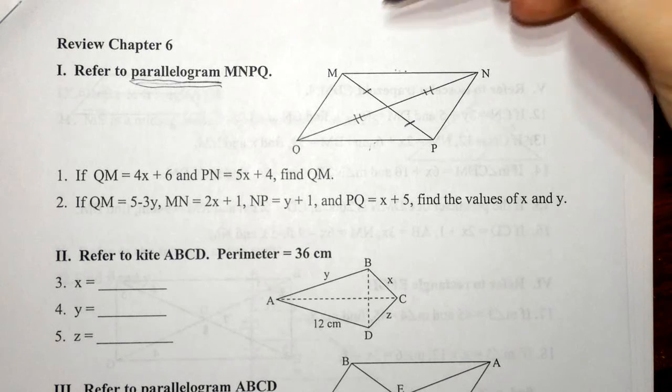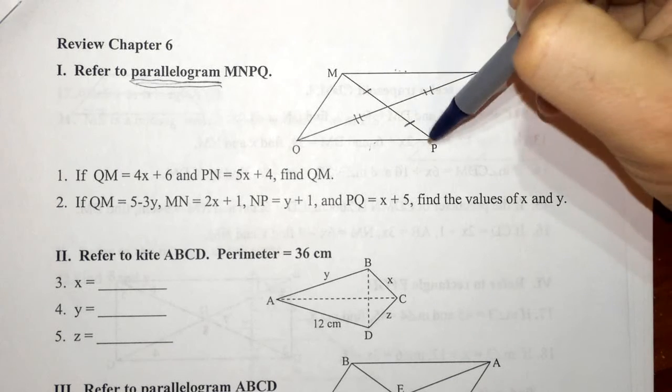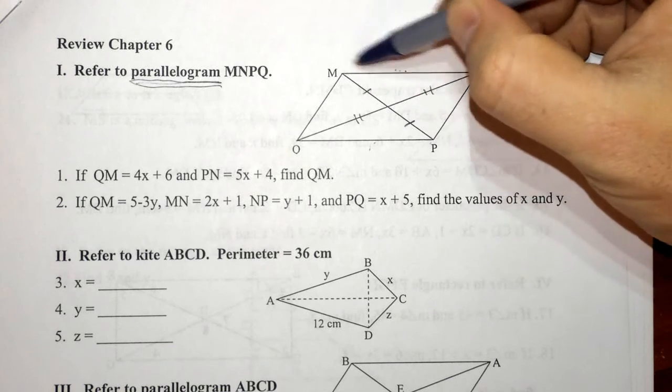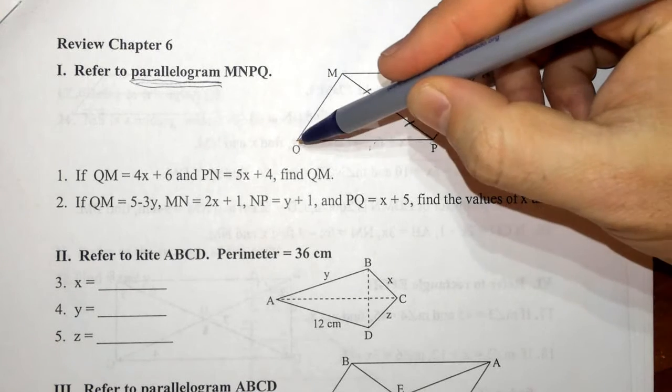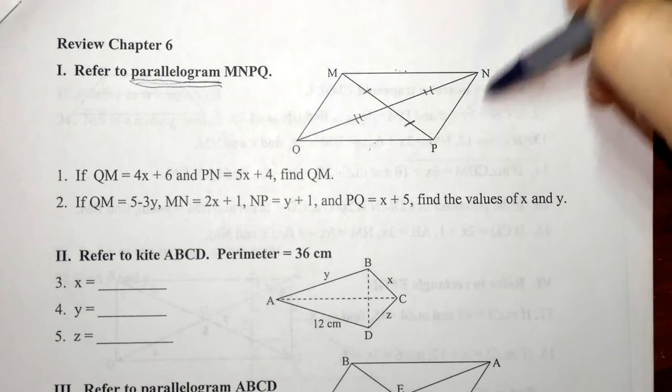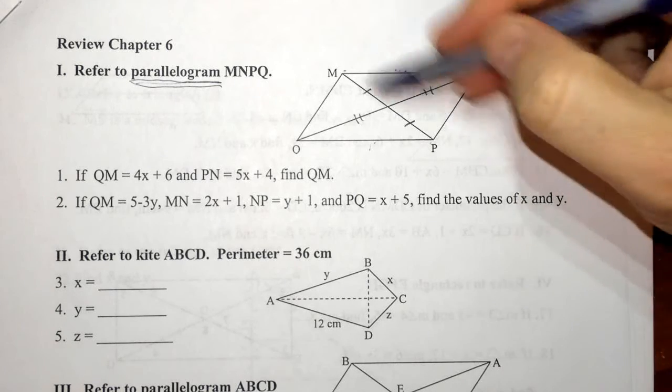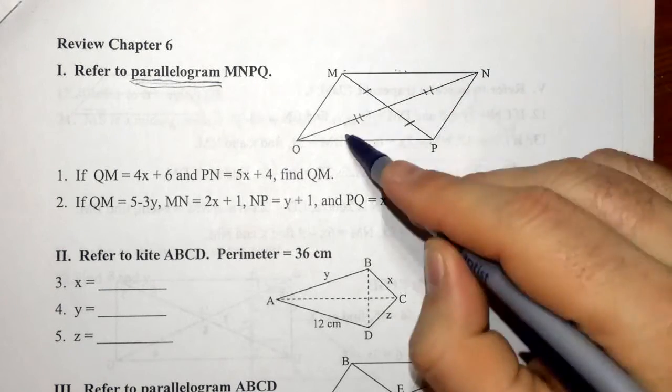We also know as our fourth property that opposite angles are congruent, so here the greater angle M, so OMN, is congruent to, actually that's QPN, so opposite angles are congruent, both the acutes and the obtuses.